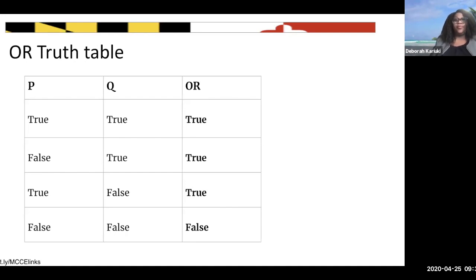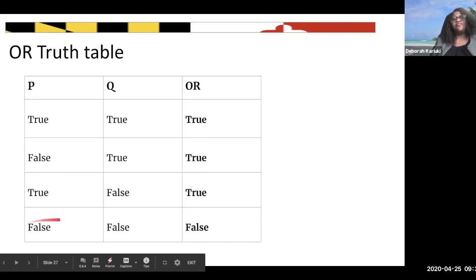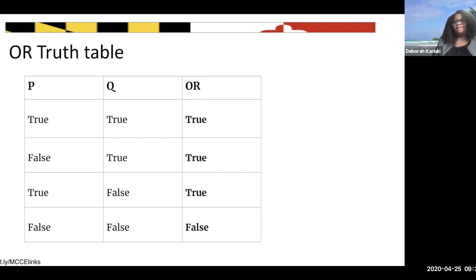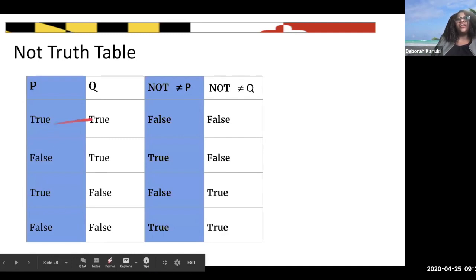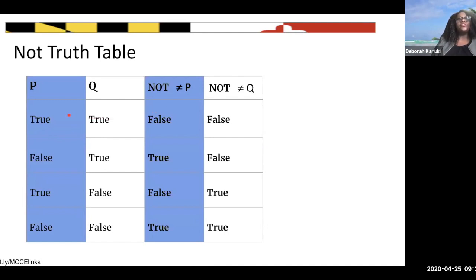Now let's look at the OR table. As long as one of them is true, your answer will be true. So true OR true yields true; false OR true yields true; true OR false yields true; but false OR false yields false. And the NOT truth table: it takes whatever value was true and flips it to false. NOT usually goes before a variable, and whatever is in there gets flipped.